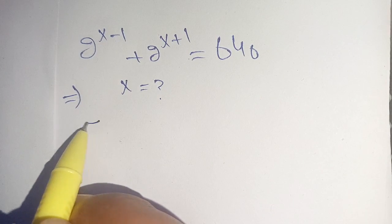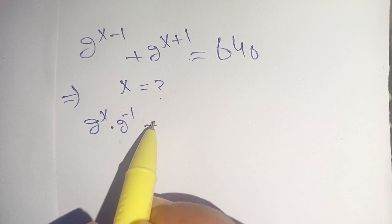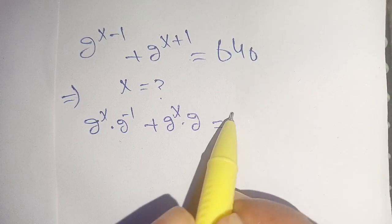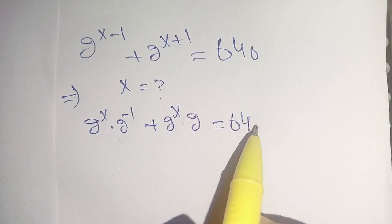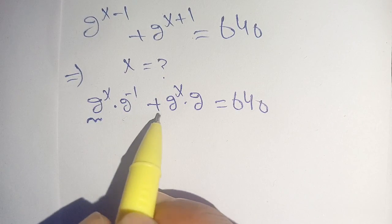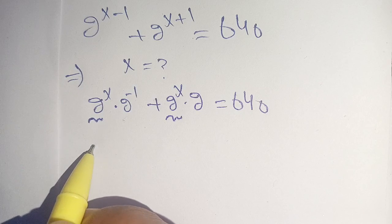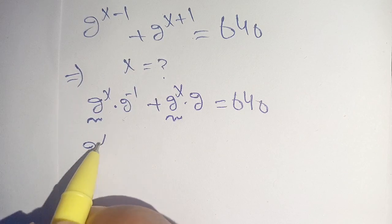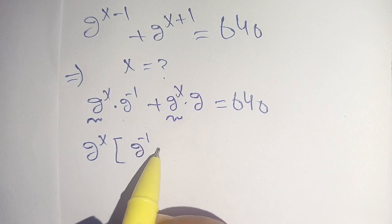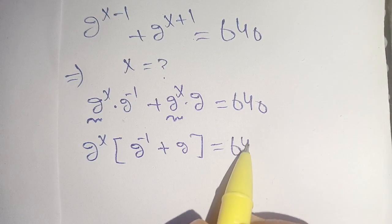We write down as 2 power x times 2 power minus 1, plus 2 power x times 2, is equal to 640. Now in the next step we can take out 2 power x from both terms and we get 2 power x times (2 power minus 1 plus 2) is equal to 640.